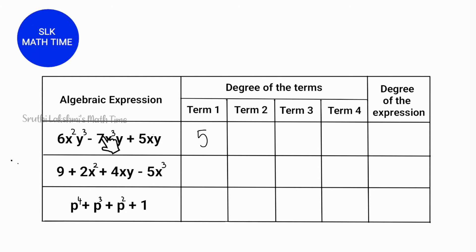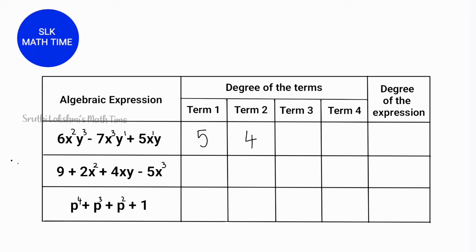Now let's look at term 2: 7x³y. Here we have 2 variables but only 1 exponent. If a variable doesn't have an exponent, it is considered to have an exponent of 1. Since the variables are being multiplied together, let's add the exponents: 3 + 1 = 4. Now the third term is 5xy. Here we have 2 variables but none of them have exponents, so let's add exponents of 1 for each: 1 + 1 = 2. There is no fourth term in this expression, so let's write down 0. Comparing all terms, the greatest number is 5, so the degree of this expression is 5.